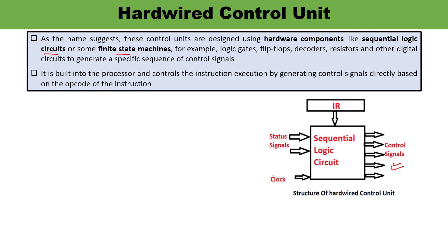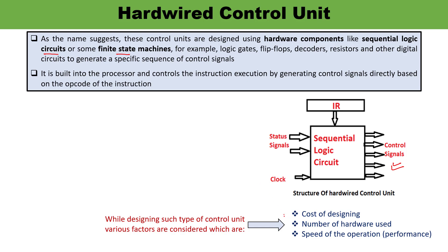Depending upon the number of hardware components, the cost will vary and the complexity of the circuit will vary. So the cost of designing the control unit depends upon the number of hardware components to be used. We must try to optimize the number of hardware components so that the cost can be reduced. Along with that, we must also be concerned about the performance of the system — the speed of operations. So these are the three factors which need to be taken into consideration while designing the control unit.